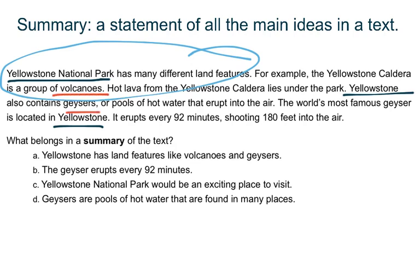So I know that option A is a correct answer: Yellowstone has land features like volcanoes and geysers. It tells me a main idea of the text, so it belongs in a summary.